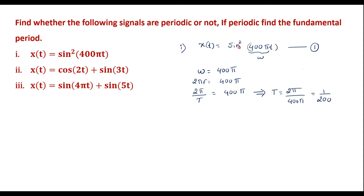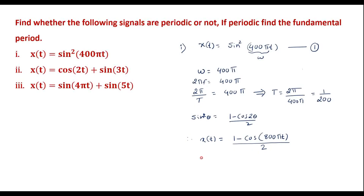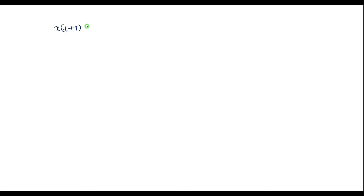Now we will check whether this signal is periodic or not. We know that sin²θ = (1 − cos2θ)/2. Comparing with equation 1, θ = 400πt. Therefore x(t) = (1 − cos(800πt)) / 2, or equivalently x(t) = 1/2 − (1/2)cos(800πt). Call this equation 2.